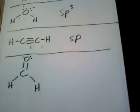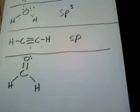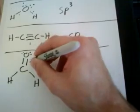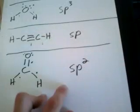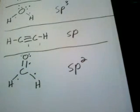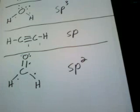Here we have formaldehyde. What is the hybridization on the carbon atom? Count the regions of high electron density: one here, one here, one here. We have three regions, which means the carbon in formaldehyde is SP squared hybridized. Hopefully this video has shed some light on hybridization and how to determine the hybridization on any atom. Good luck.